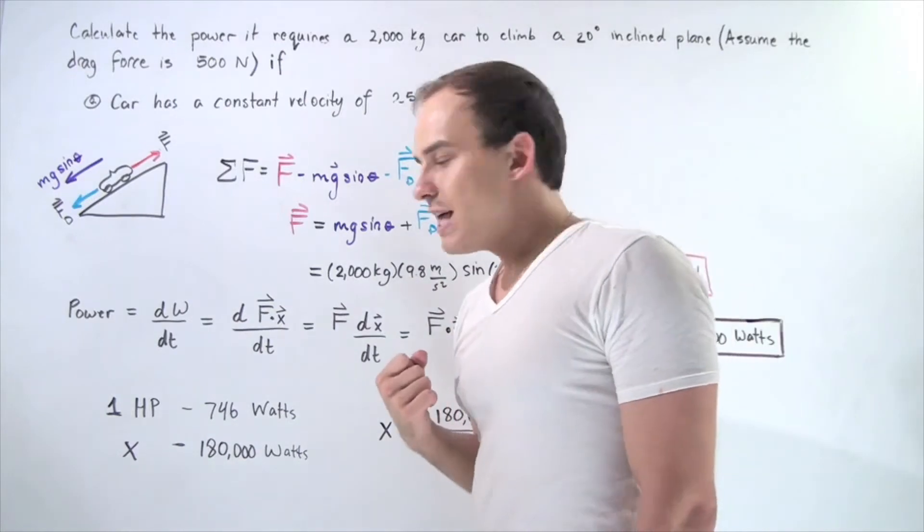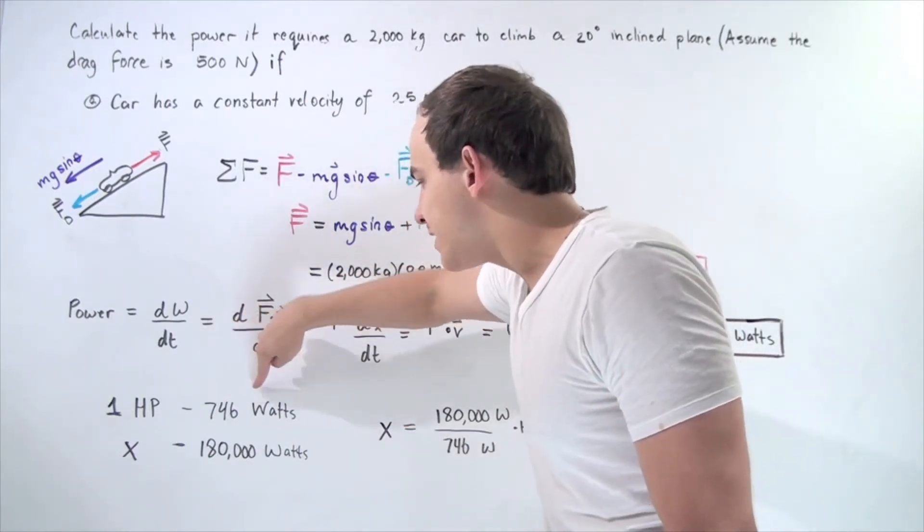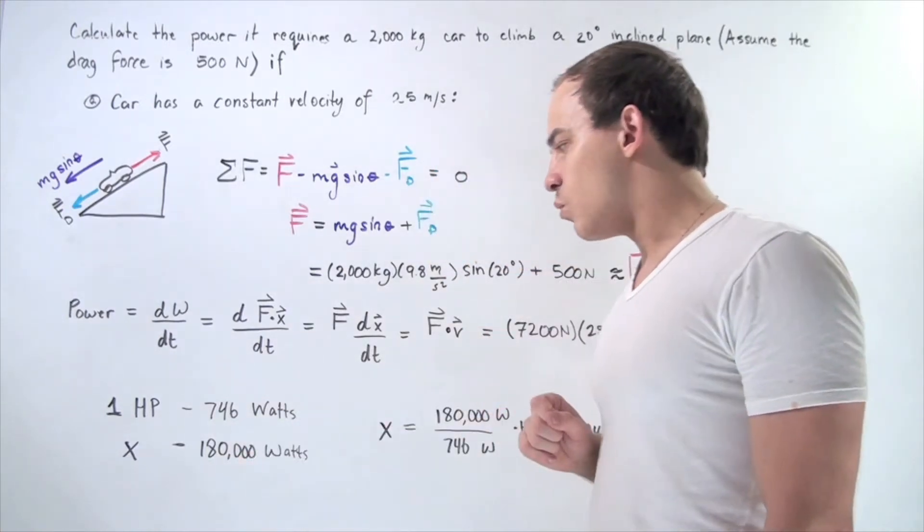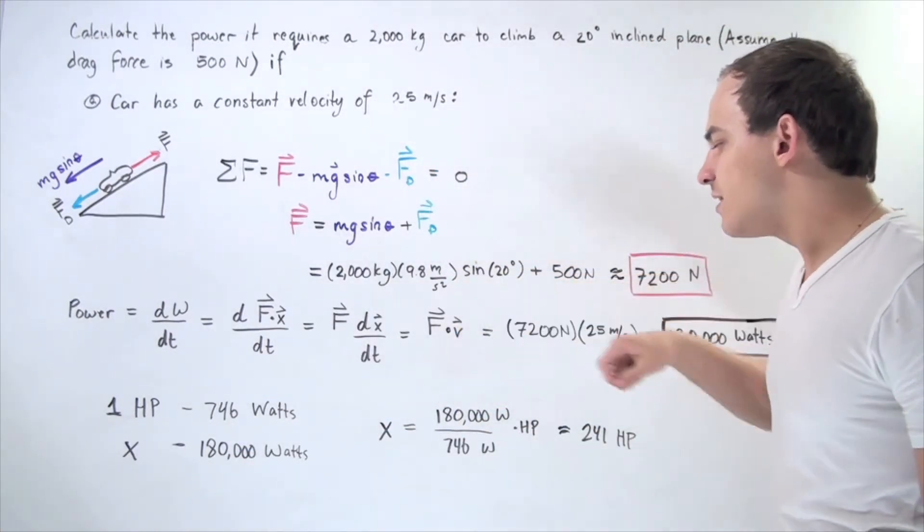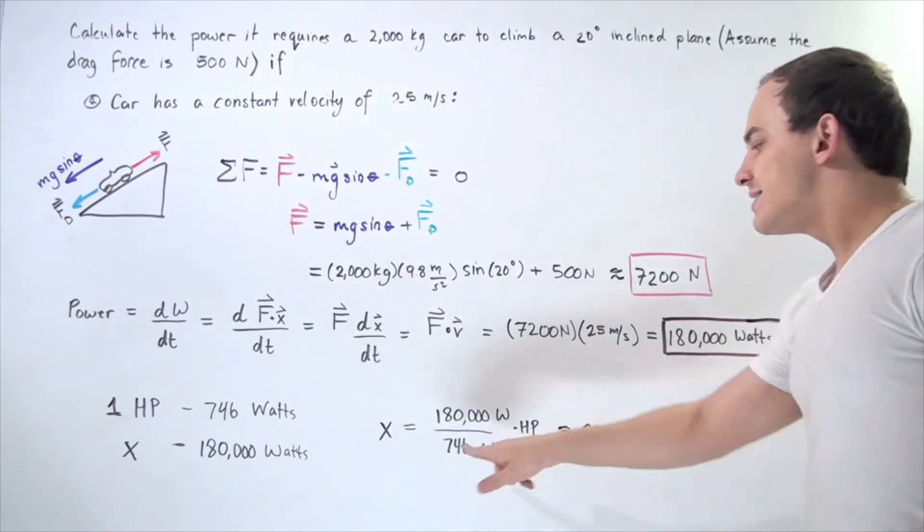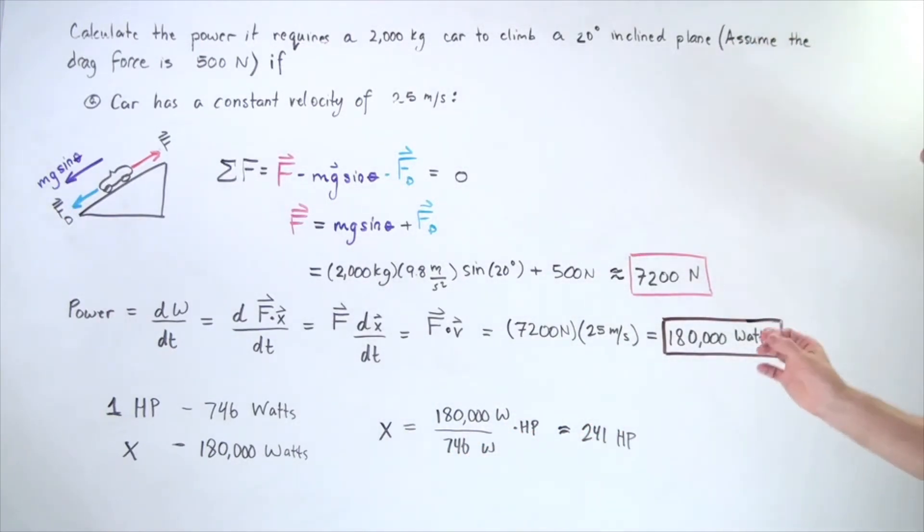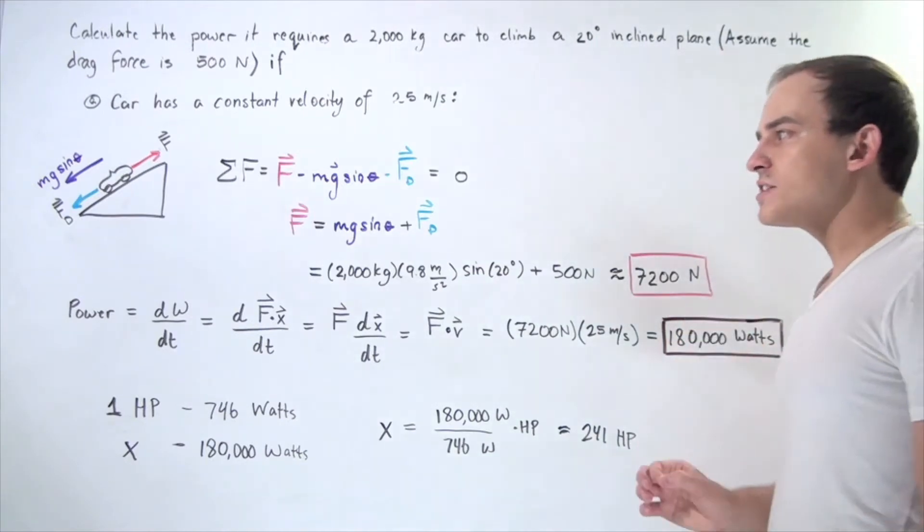There's one horsepower in every 746 watts. If we have 180,000 watts, we simply take the 180,000 watts divided by 746 watts and we get approximately 241 horsepower.